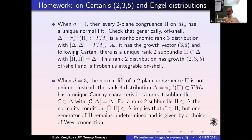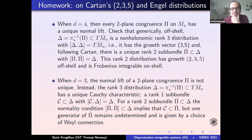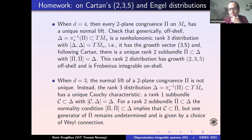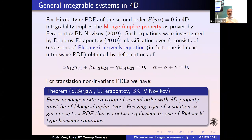Thank you very much. Questions? I have a question. I think you did not define the Monge–Ampère property when you were referring to it. Can you clarify? Yes. So the equation is Monge–Ampère, meaning it can be written as linear combinations of minors of the Hessian matrix of u. It's second order, and the coefficients depend on everything of lower jets. So it will be order zero, then linear terms, then certain quadratic terms coming from 2×2 determinants of the Hessian matrix, and so forth, up to degree d.